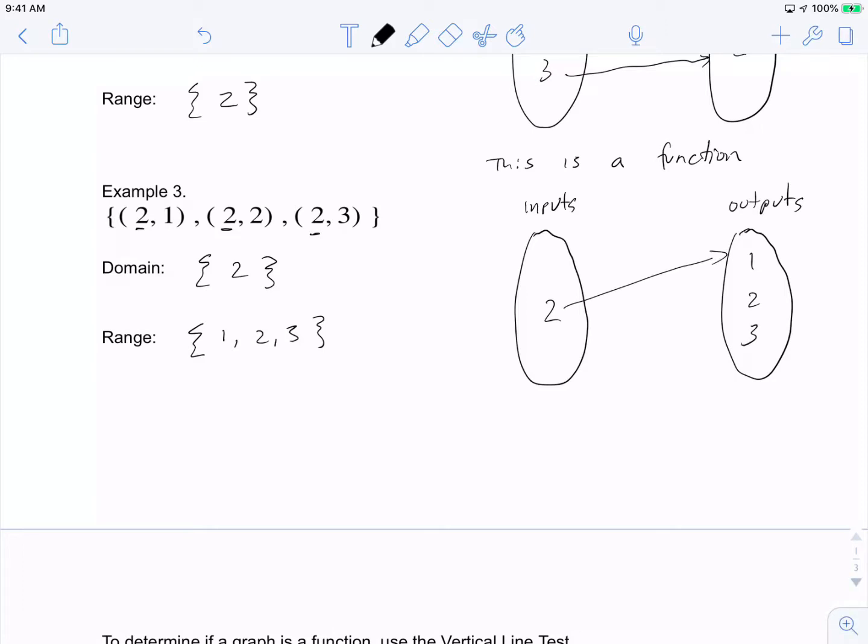Here's our collection of inputs: 2. Our outputs are 1, 2, and 3. So 2 goes to 1, 2 goes to 2, and 2 goes to 3.